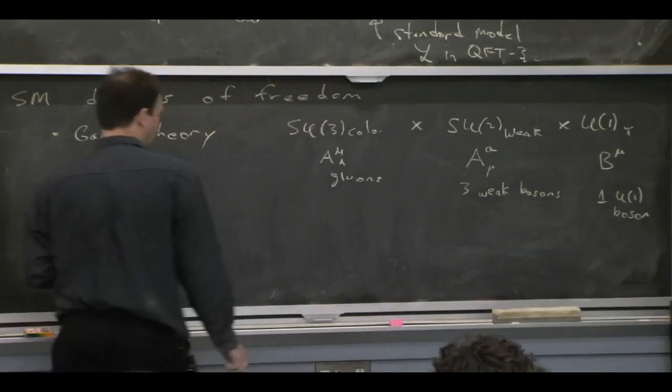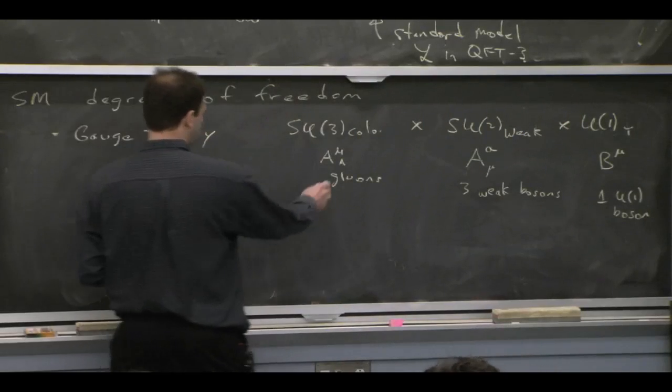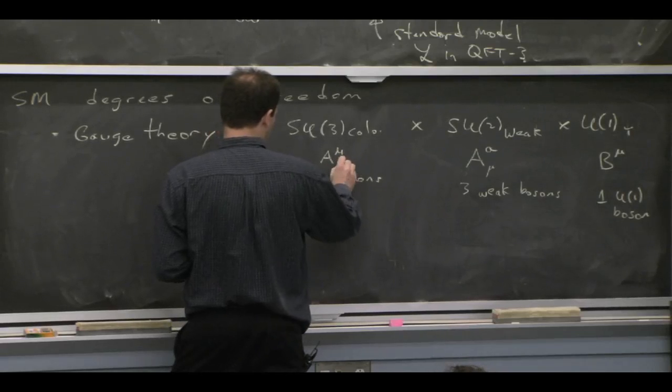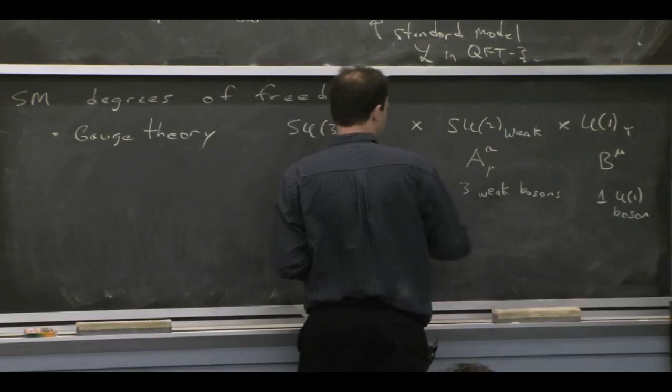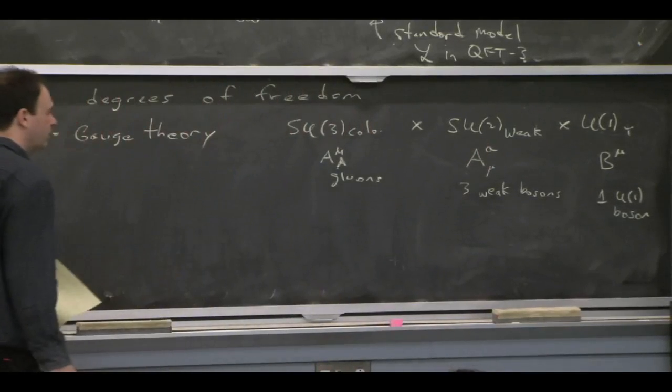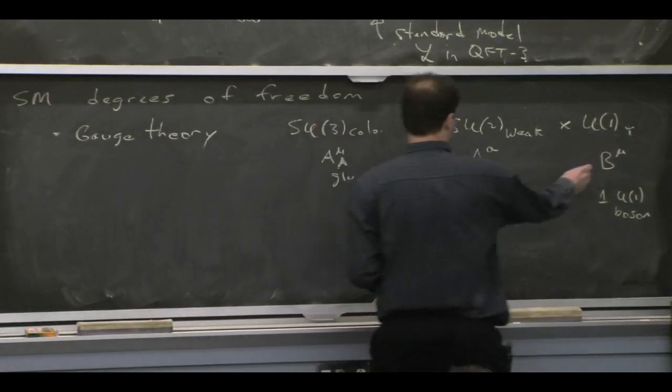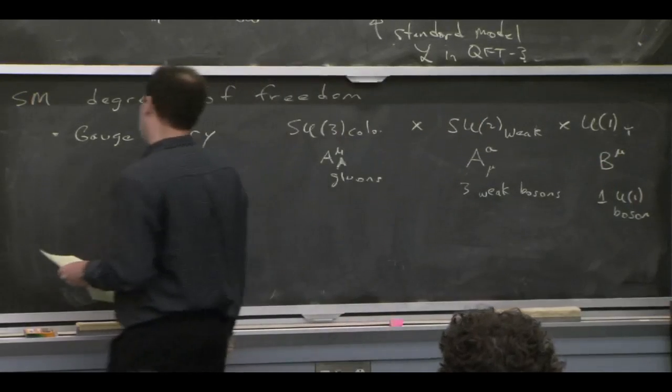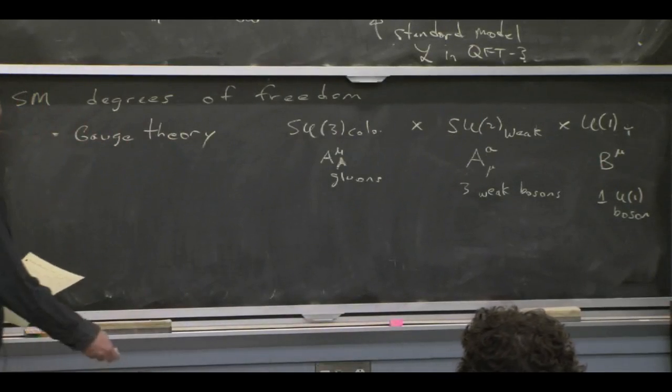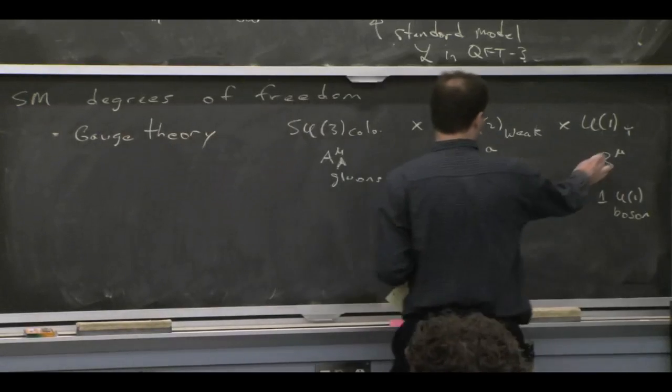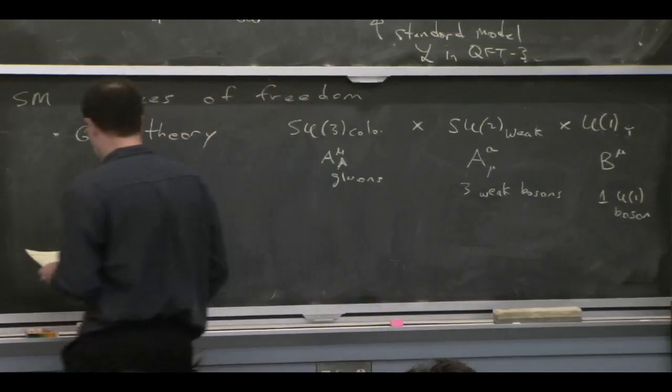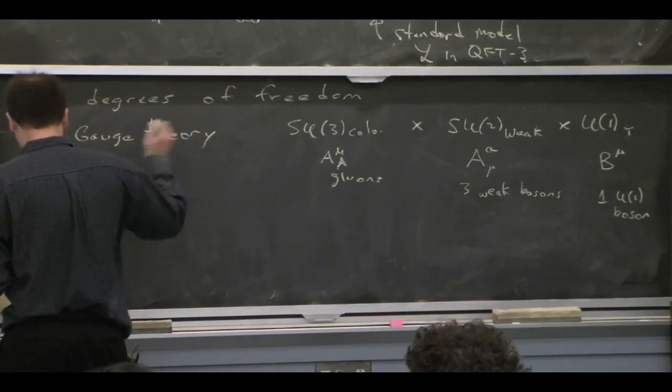Just to introduce some notation for fields, I'll call these guys with an index capital A running from 1 to 8, these guys with an index lower A running from 1 to 3. And B here would be the analog of a photon field for U1 of electromagnetism. But this is the U1 of hypercharge. So it's B mu. So we have gauge bosons.